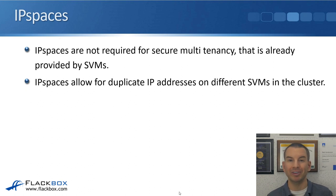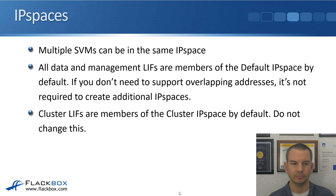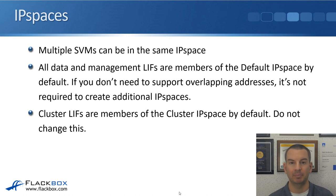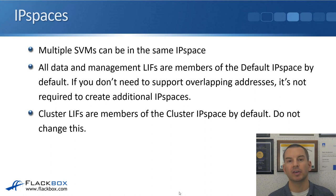The only reason we really need to use IP spaces is if we've got duplicate IP addresses. Multiple SVMs can be in the same IP space, and very commonly will be. All data and management lifts are members of the default IP space by default. If you don't need to support overlapping addresses, it's not required to create additional IP spaces. You will have at least one other IP space — the cluster IP space — which is there by default and contains your cluster lifts. Don't change that; just leave it as is.